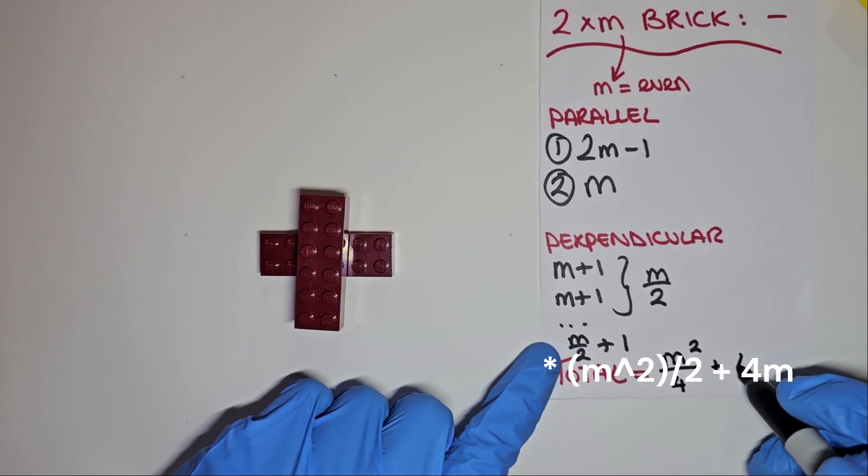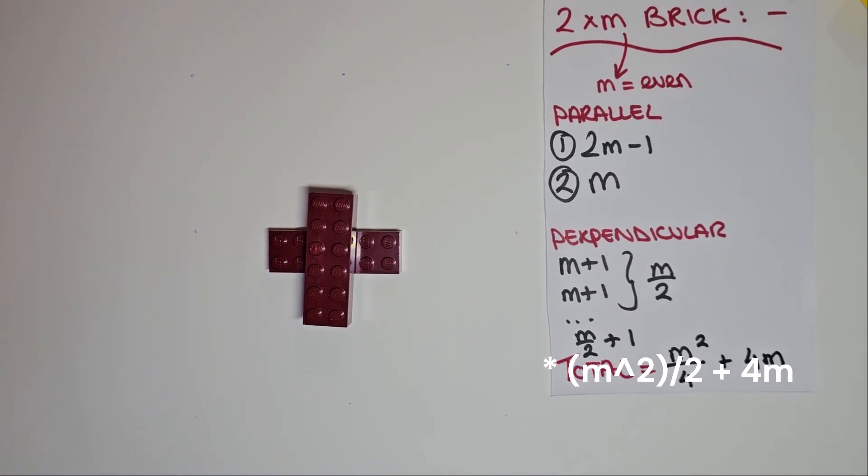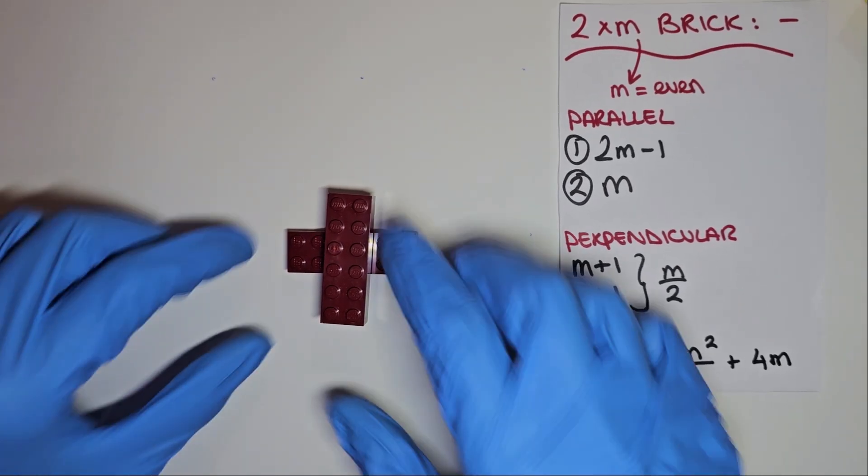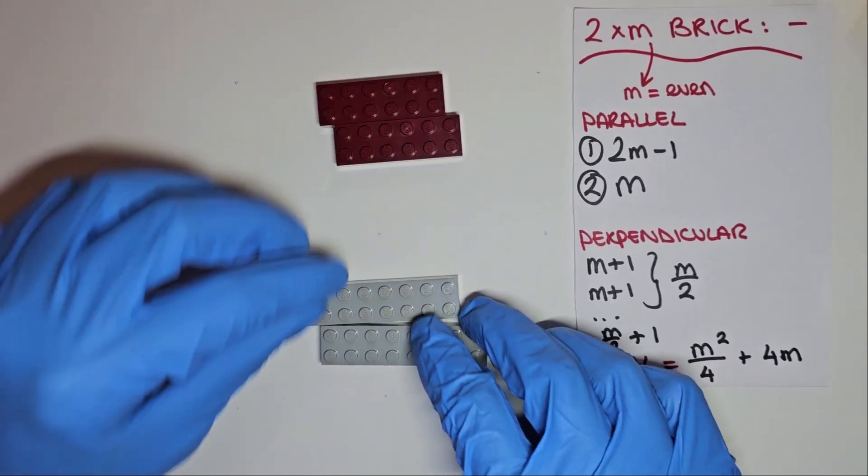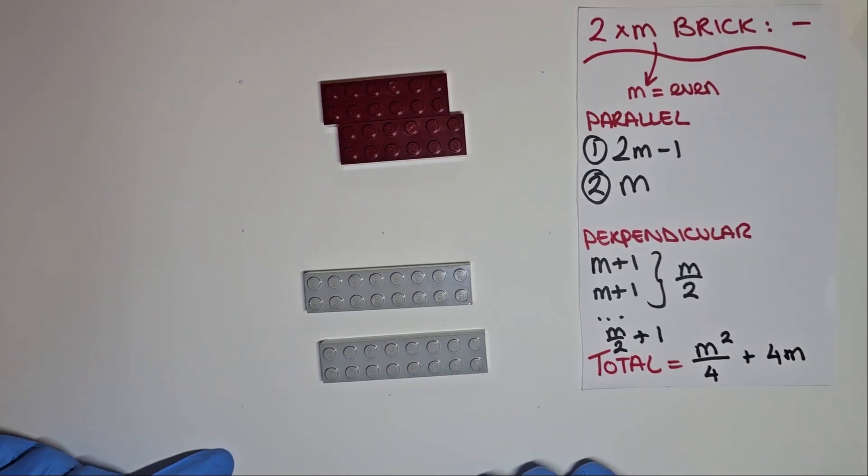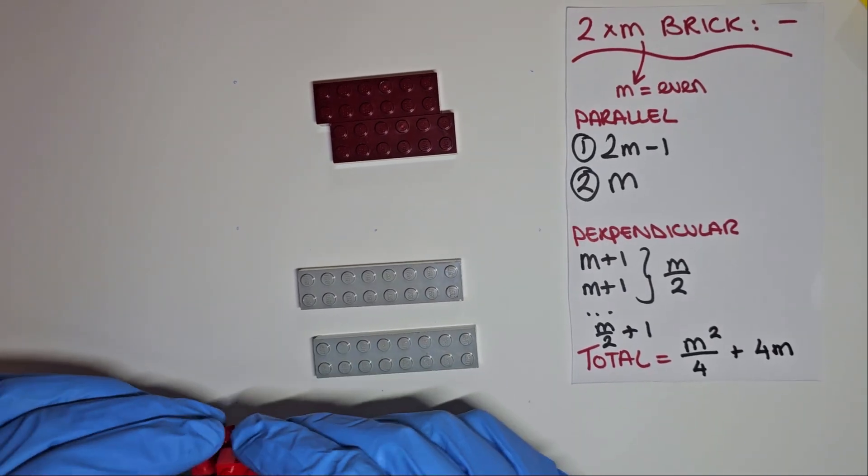If you had a go, comment the number of combinations for the 2x6 and 2x8 bricks below. Please note, this only applies when m is greater than 2. When m is 2, it won't follow on, as it essentially has too much rotational symmetry as a square.